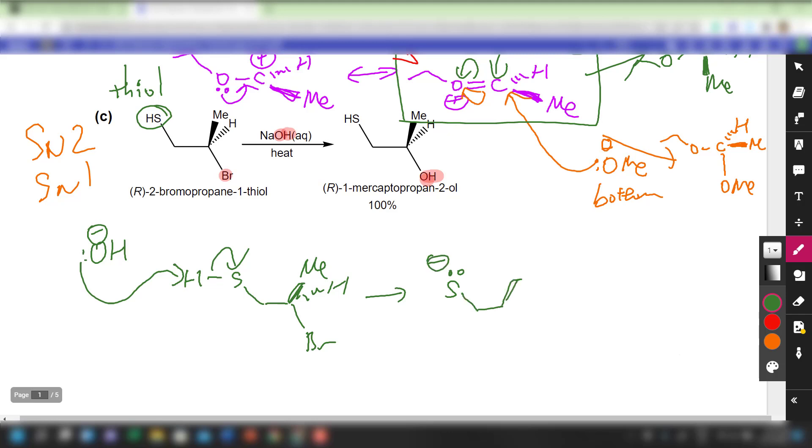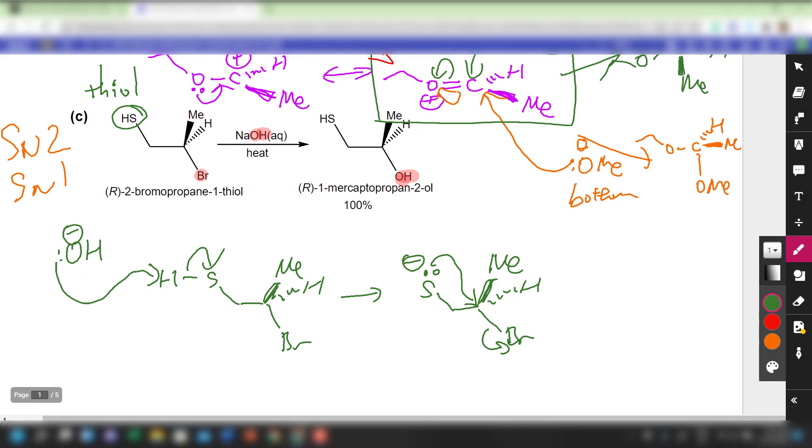Which allows what we call an internal nucleophilic substitution to take place. And then in the process, it will produce a three-membered ring, which is highly strained. Then the highly strained three-membered ring will of course encourage a nucleophilic attack by the OH-, by the hydroxide nucleophile from the rear of the C-S bond like this. And then it will break towards the S.